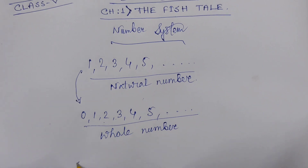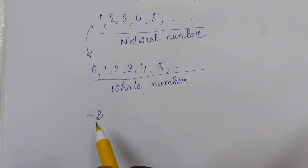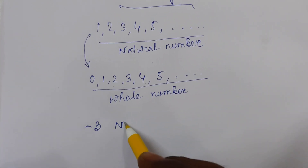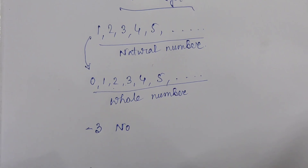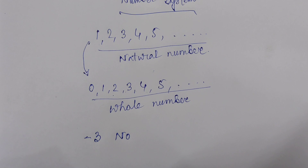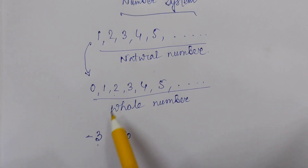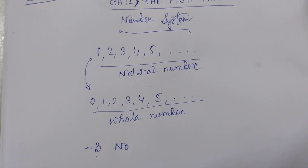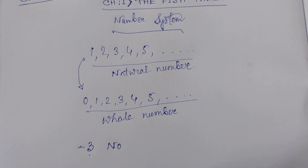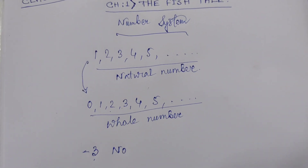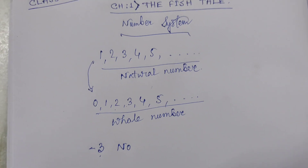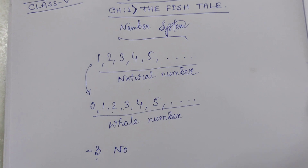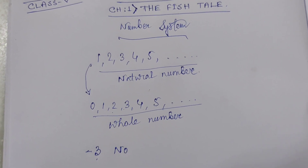Now, suppose if I take minus 3. Is it a natural number? No. It is not a natural number because minus 3 is not in this group. Minus 3 is not a natural number. No negative number is a natural number because the natural numbers start from 1 and go up to infinite.